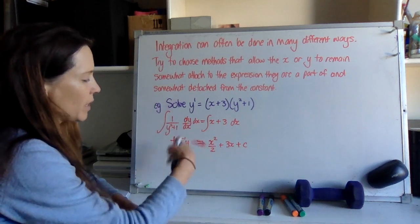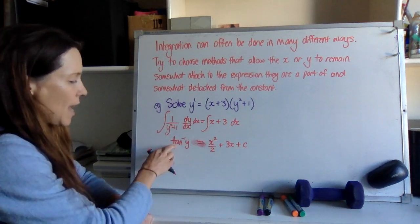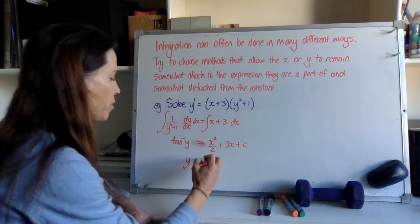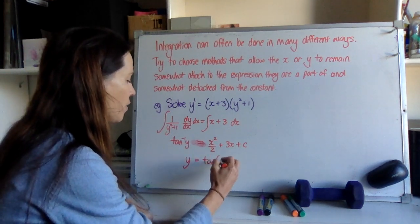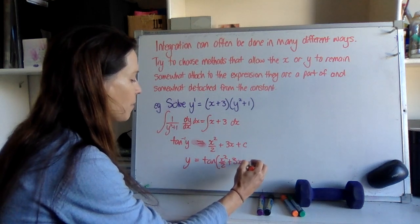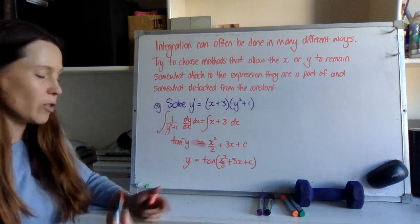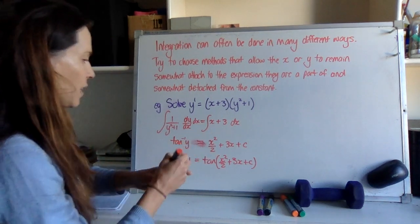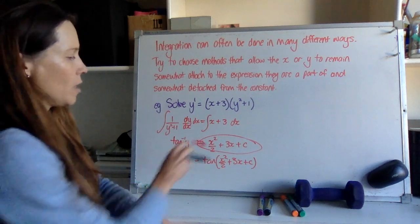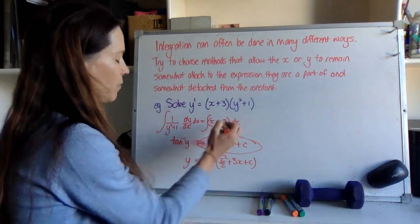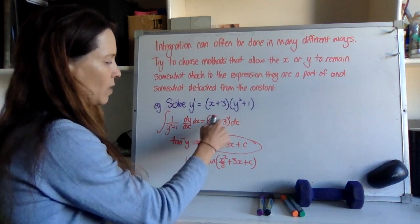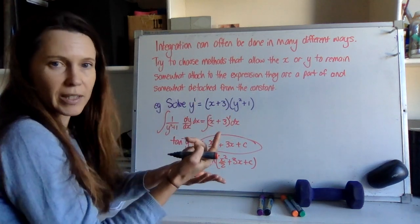So now when we're going to tidy this up and get it in terms of Y, the tan of all of this is equal to Y. So we've got the tan of X squared over 2 plus 3X plus C. But as we go to find our solutions, we could have actually made our life a little bit easier if instead of writing that down, we could have just taken this whole power here and reasoned that it's a little function of X raised to the power of 1. It's got F dash X out the front.